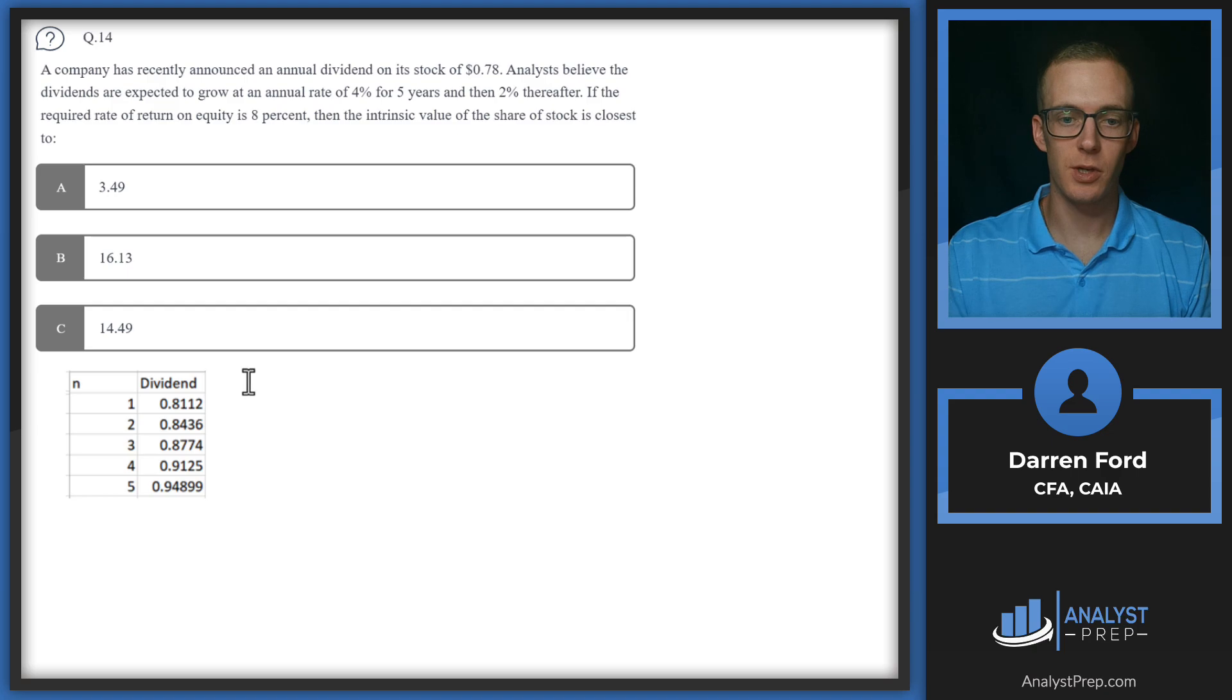For our inputs to the calculator, these are going to be our cash flow periods. Our cash flow in period one is going to be that 0.78 multiplied by 1.04, which is going to give us 0.8112. Then we're multiplying by 1.04 again, which is that annual growth rate, and so on down the line into period five. These will be the first inputs that we're putting into that cash flows calculator.